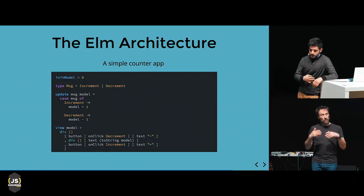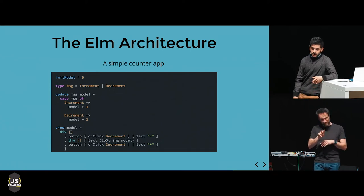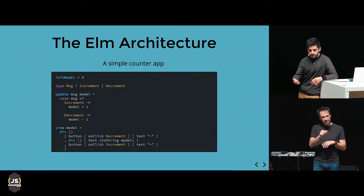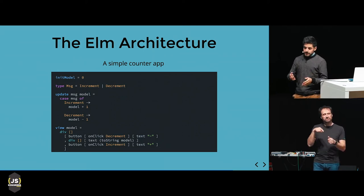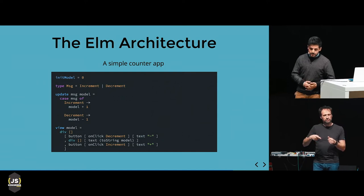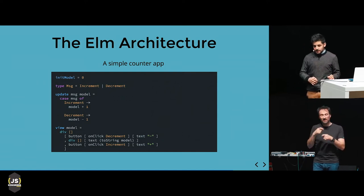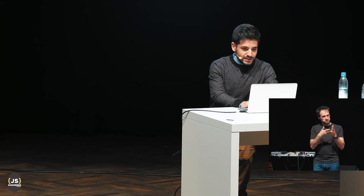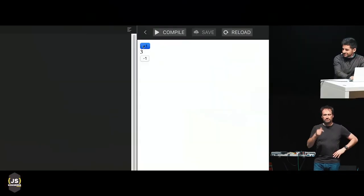And finally our view is just a div which renders three elements: a button with text 'minus' that reduces our counter, binding an event handler so that whenever the button is clicked it triggers the decrement message, and another button that does the same for increment. If we actually check this out, this is exactly the same code, and we have our simple counter app.